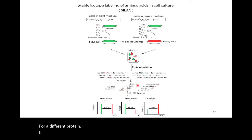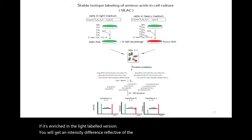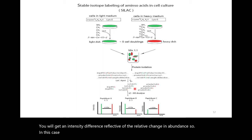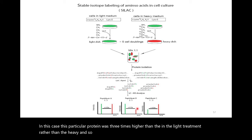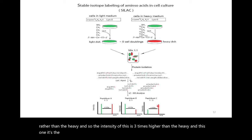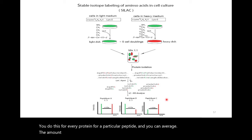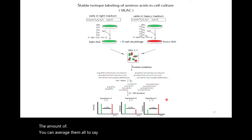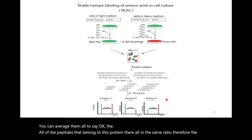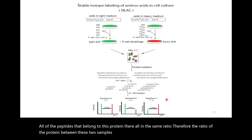If they're in a one-to-one ratio, the intensities of the two peaks will be the same. For a different protein enriched in the light-labeled version, you get an intensity difference reflecting the relative change in abundance — for example, three times higher in the light treatment means the light peak intensity is three times higher than the heavy. You do this for every peptide and can average the ratios across all peptides belonging to the same protein to determine the overall protein ratio — one-to-one, three-to-one, or one-to-three.